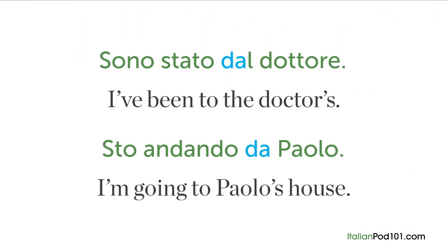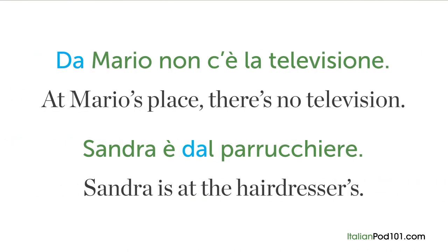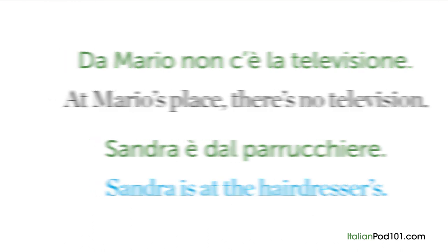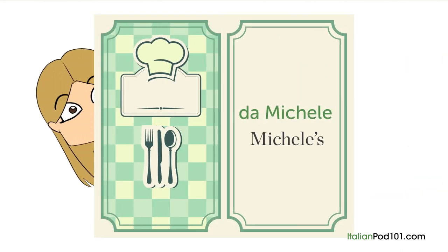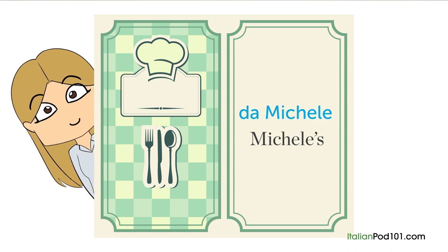DA is also used to indicate movement toward a place or a person: 'sono stato dal dottore' — I've been to the doctor's; 'sto andando da Paolo' — I'm going to Paolo's house. DA also has the meaning of AT or TO: 'Da Mario non c'è la televisione' — at Mario's place there is no television; 'Sandra è dal parrucchiere' — Sandra is at the hairdresser's. Many restaurant names also use this pattern — for example, 'Da Michele' — Michele's. A presto!